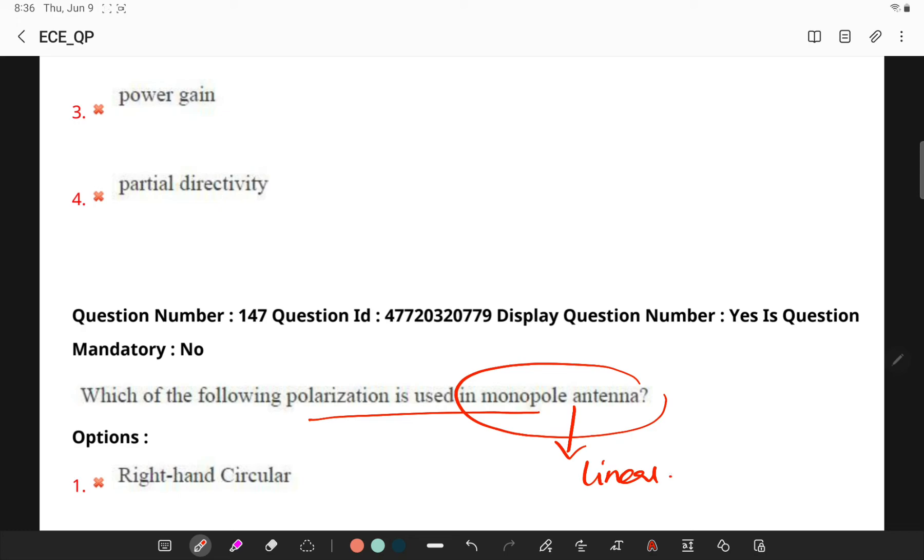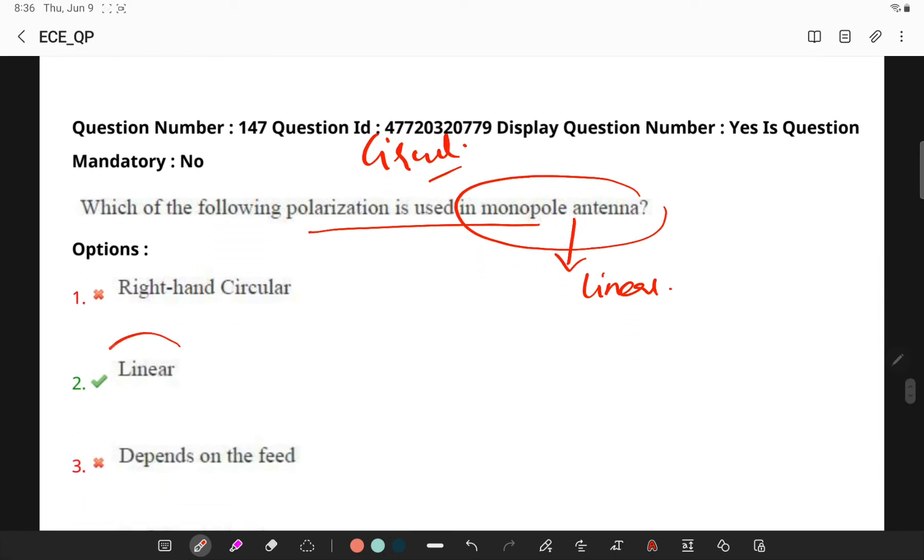In dipole antenna also linear polarization will be taking place. Whereas, parabolic reflectors will be having polarization of the feed and in helical antenna only you will be having circular polarization. So, linear polarization is in monopole antenna.